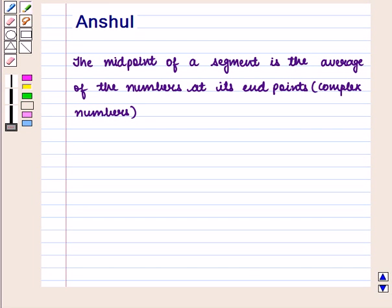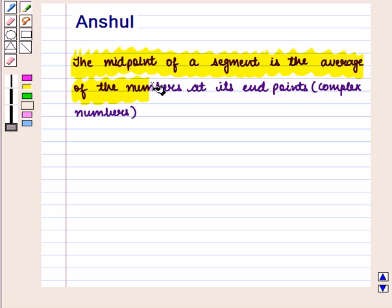Hello and welcome to the session. In this session we shall discuss that in complex numbers, the midpoint of a segment is the average of the numbers at its end points. We will understand this with the help of an example.